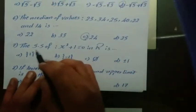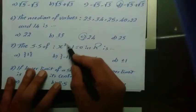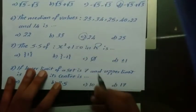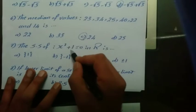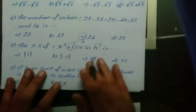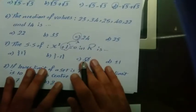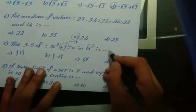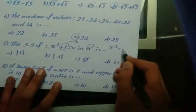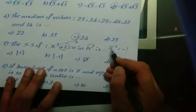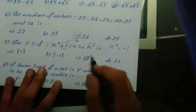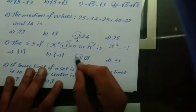The solution set of x squared plus 1 equals 0. Moving 1 to the other side gives x squared equals negative 1. Since no real number squared equals a negative number, the solution set is the empty set (phi).